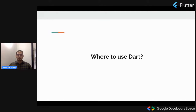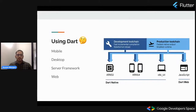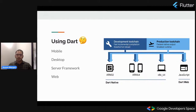Let's see where to use DART. DART can be used in mobiles, on desktops, in server frameworks, and on the web. On the right-hand side you can see a diagram which shows how we can use different DART VMs in production as well as development. The dark blue side shows the development toolchain supported by DART — a different compiled version used for development. Once we go to production, we use a different runtime suitable for production use cases.